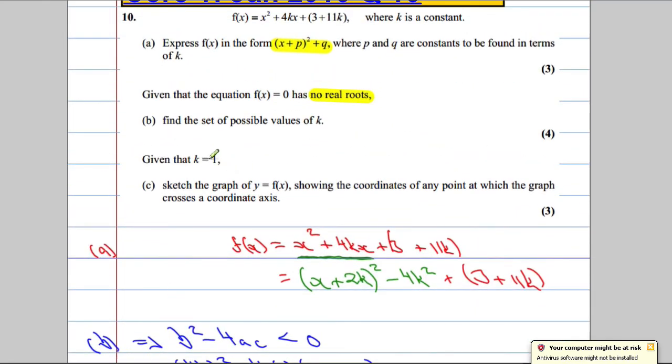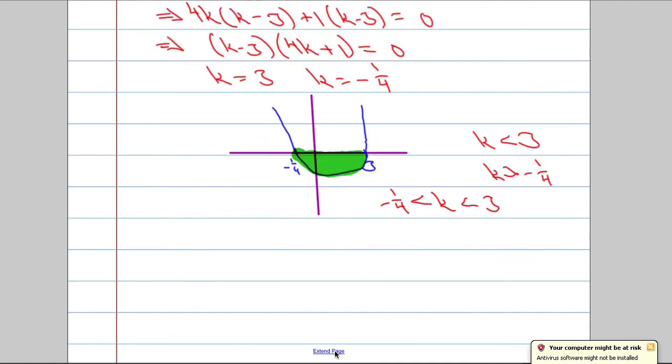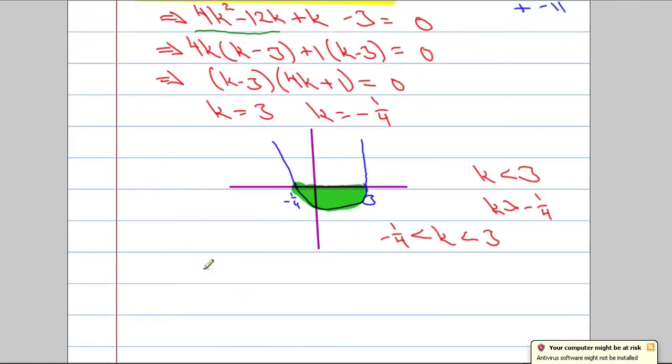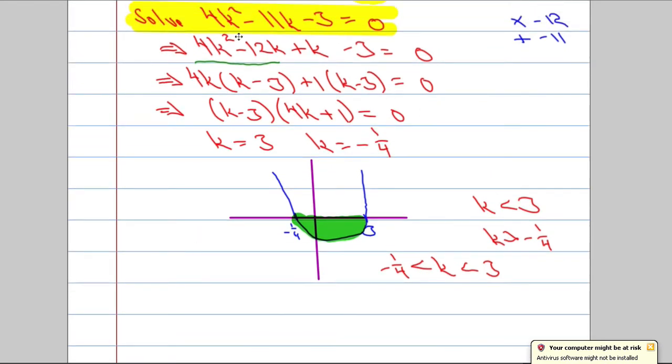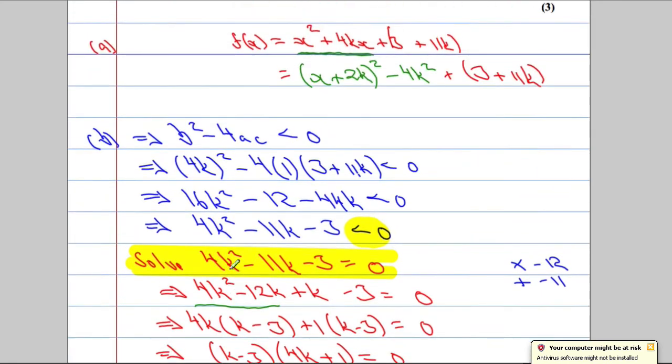Now, the next part says, given that k is equal to 1, so we go through all that trouble to work out possible values of k, and then it tells us that it's actually equal to 1. Sketch the graph of the function showing the coordinates where it crosses the axis. So, k equals 1. K equals 1, which means back to this one up here. K equals 1. The function now becomes, oh, careful. I need to be very careful. K equals 1. Let's go back up to this f of x.